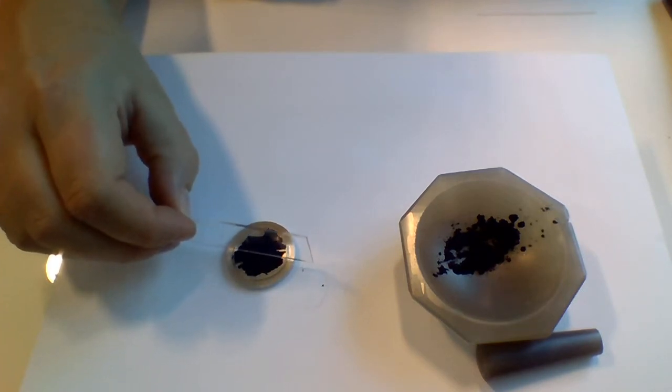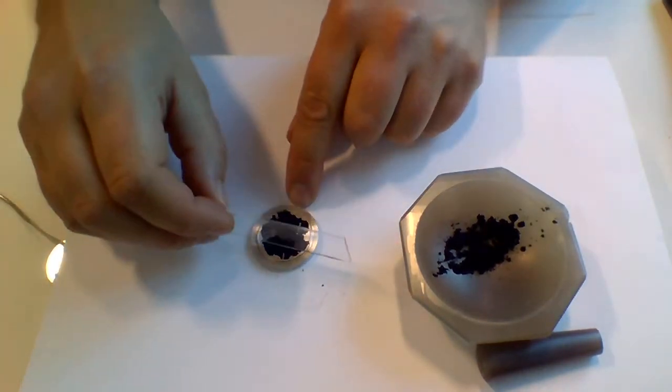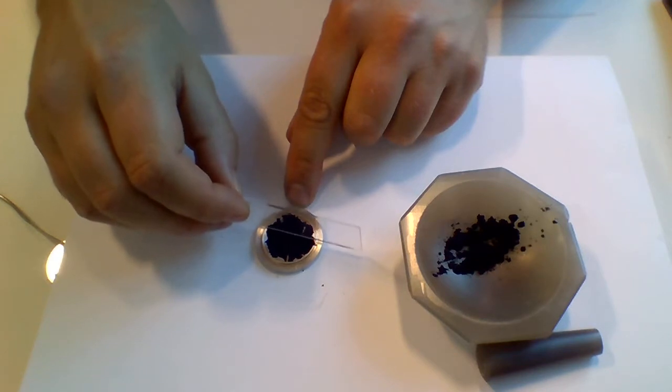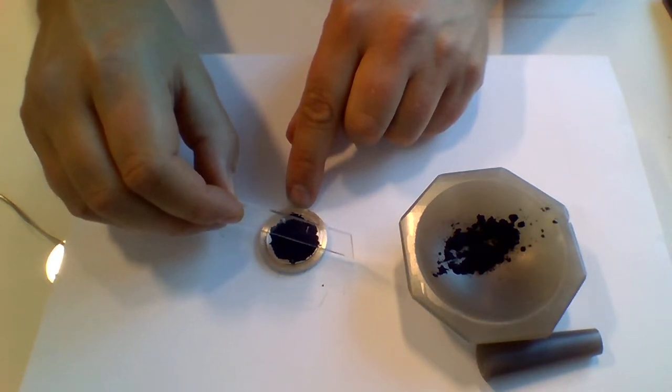Some crystal systems grow needles or platelets, and if you have these systems, it can be easy to actually make a preferential alignment if you're just pressing the sample into the sample holder.